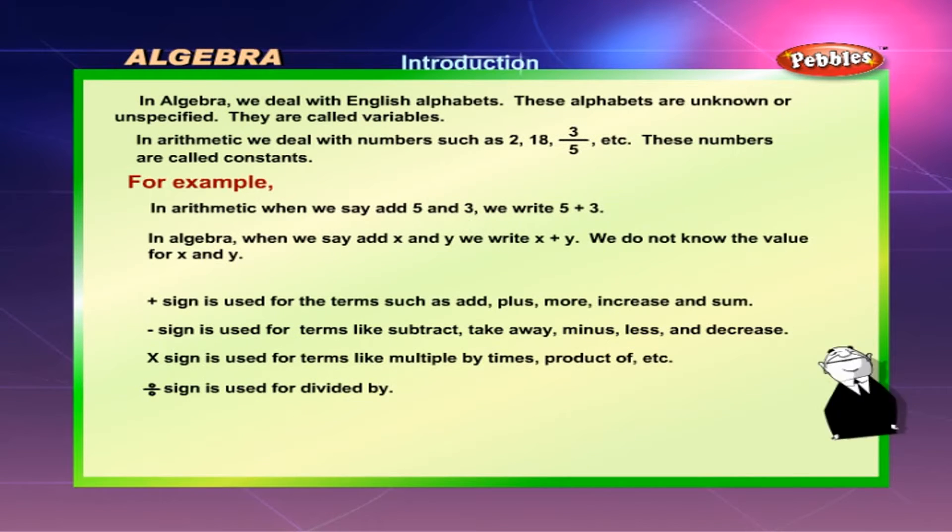In algebra, we deal with English alphabets. These alphabets are unknown or unspecified and are called variables. In arithmetic, we deal with numbers such as 2, 18, 3/5, etc. These numbers are called constants.